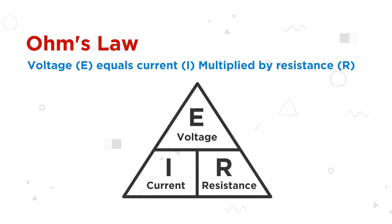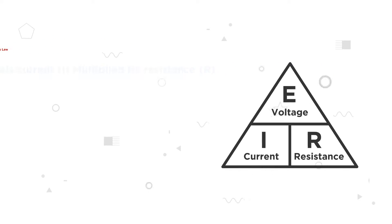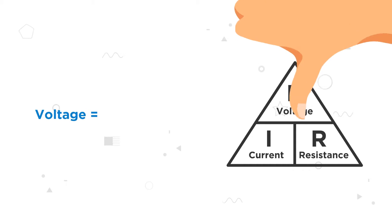To solve for voltage, cover voltage on the triangle with your thumb. We can see that voltage is equal to current times resistance.